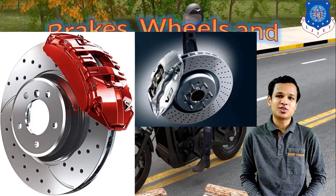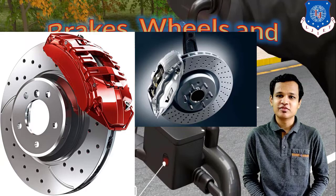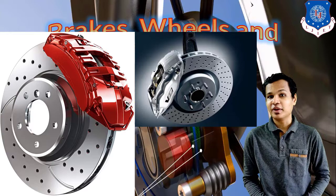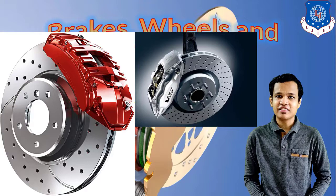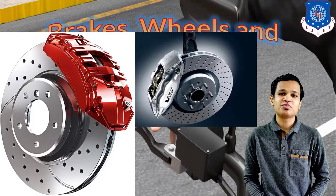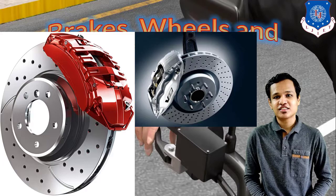Hello students, welcome to the new chapter of the series lecture on two- and three-wheeler technologies. This chapter deals with the brakes, wheels, and tires of two-wheelers. We will discuss the importance of brakes, why brakes are required in a vehicle, newer technologies to apply brakes safely and prevent accidents, especially in two-wheelers. We will also see the types of tires generally used in a two-wheeler nowadays. So let's start this new chapter.